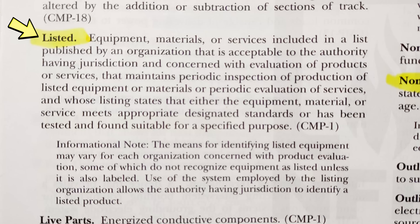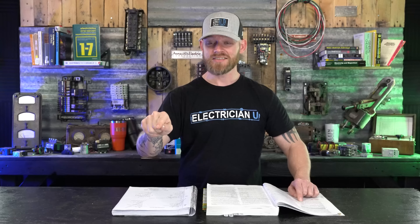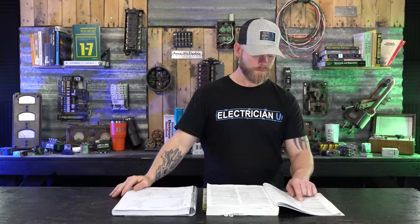Listed means equipment, materials, or services included in a list published by an organization acceptable to the AHJ, concerned with evaluation of products and services, that maintains periodic inspections of production, and whose listing states that the equipment meets appropriate designated standards or has been tested and found suitable for a specific purpose. UL, for example, evaluates things and gives a thumbs up with a UL stamp on the label. There have been cases — like the Federal Pacific situation — where they got their UL rating taken away but kept printing UL on stickers for years, even though they weren't listed, which led to lawsuits and the company closing. Not everything has to be listed, but certain things code does require to be listed.